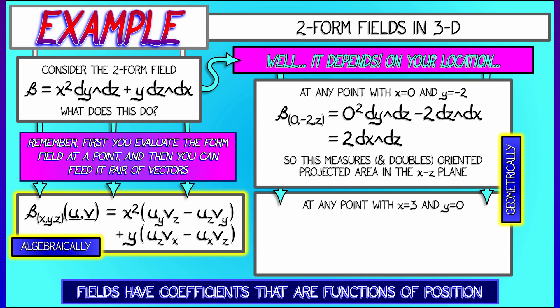Now, let's say you move to a different point. Let's say some point where the x coordinate is 3 and the y coordinate is 0. Then beta evaluated here is going to simplify to 9 times dy wedge dz. So geometrically, this is oriented projected area in the y z plane times 9.